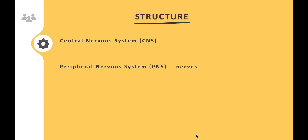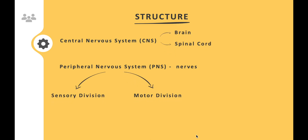Receiving information and relaying it to the relevant organ of the body is done through the peripheral nervous system. Within the central nervous system, the brain and the spinal cord constitute the CNS. The peripheral nervous system has a sensory division and a motor division. The sensory division relays all sensory information to the central nervous system, while the motor division relays motor information from the CNS to the relevant organ.